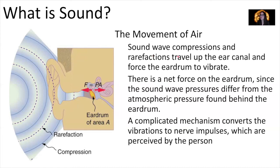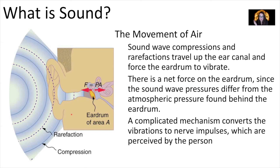How does our ear hear sound? Sound wave compressions and rarefactions travel up the ear canal and force our eardrum to vibrate. The sound wave moves through air with compression regions and rarefaction regions — these density waves travel with a fixed frequency and fixed wavelength, hit your ear, force your eardrum to move and vibrate, and that sends a signal to your brain.